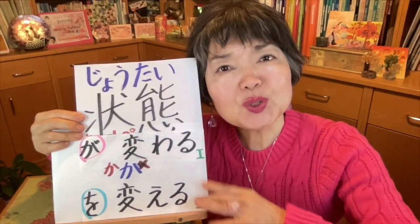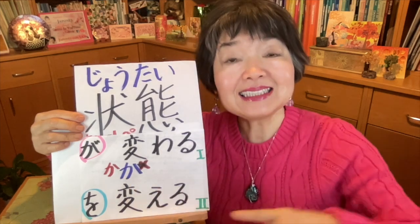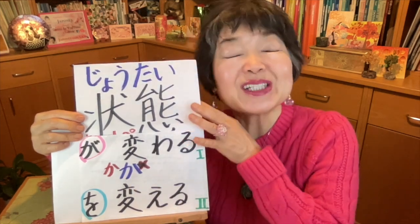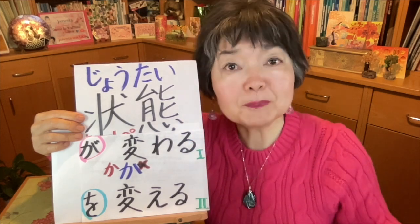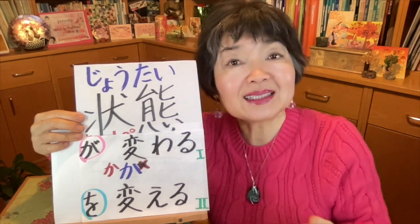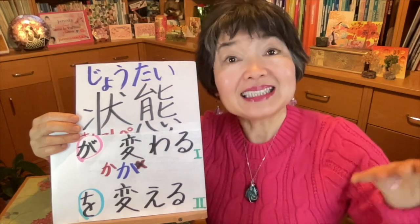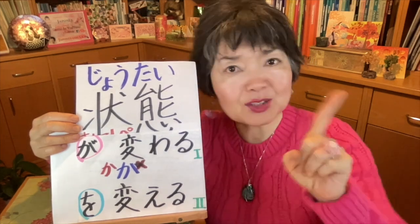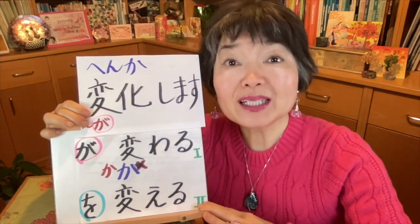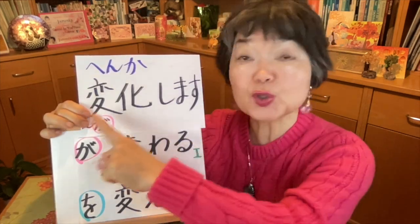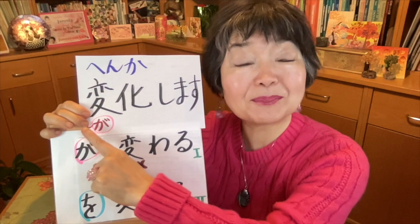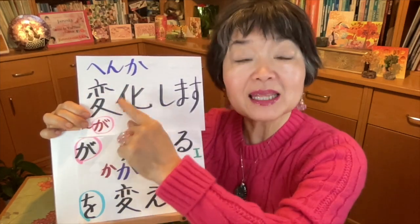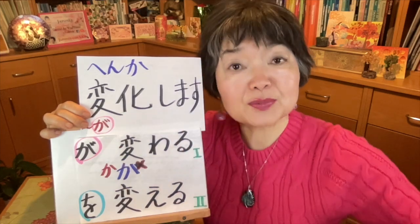When we use this kanji, this is the change of the condition — jōtai. Jōtai is condition, circumstances, or state. It means the state or condition changes, but the subject itself doesn't change. Maybe we can understand better using other jukugo. For example, this one: henka. This is 'change,' but this change is only a change of condition.